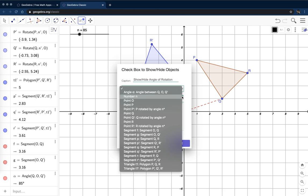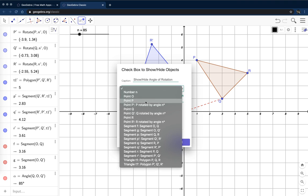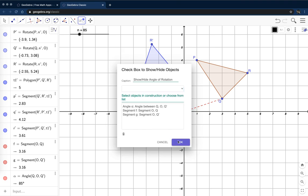And I'm going to choose the segment and the angle that is visible there. So here's the angle from Q to O to Q prime. I'm going to make that disappear when I check off the checkbox. And the segment is from O to Q. And the other one is from O to Q prime. I'm going to click OK.